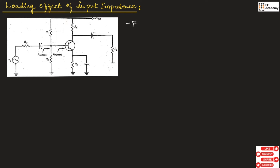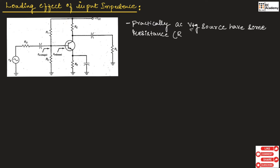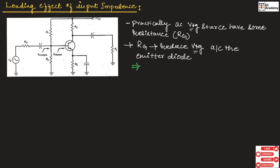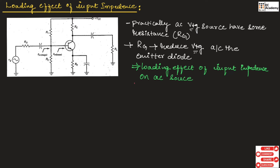Practically, the AC voltage source has some resistance represented by RG. This resistance RG reduces the voltage appearing across the emitter diode, and this effect is known as the loading effect of input impedance on the AC source. In RG, G represents generator, or it is known as source.